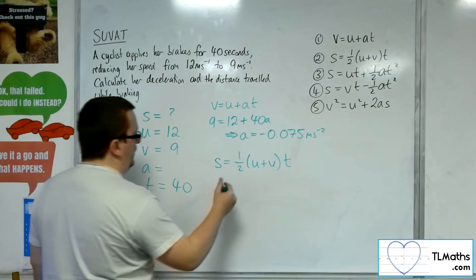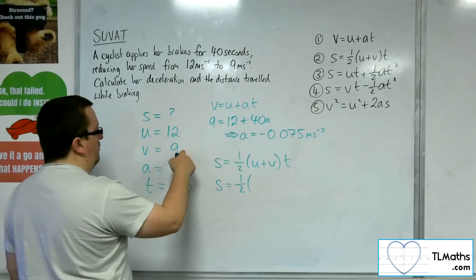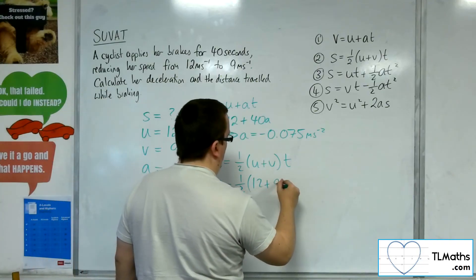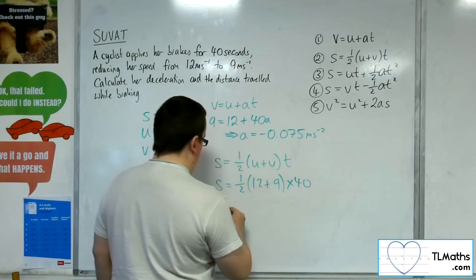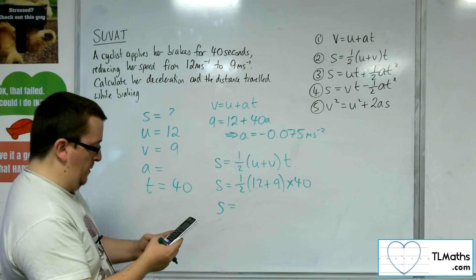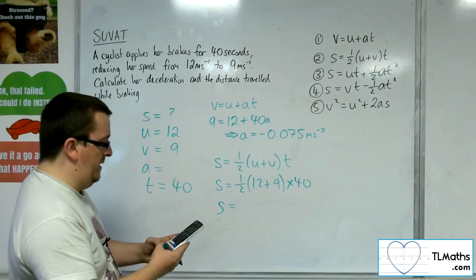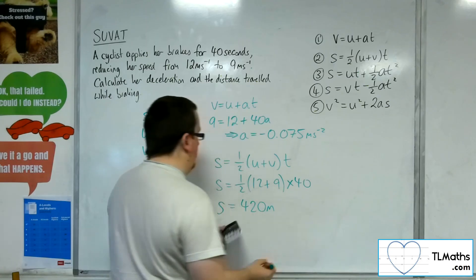I want S. So I've got the one half times U, 12 plus 9, times by the T, which is 40. So we've got the 0.5 times 12 plus 9, times 40, and that gets me 420 metres.